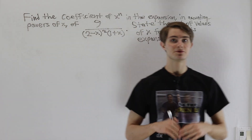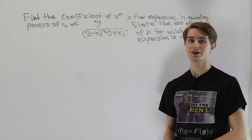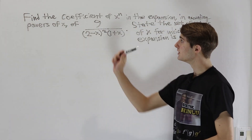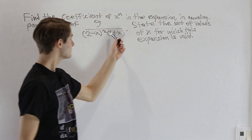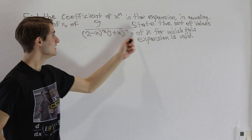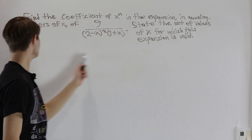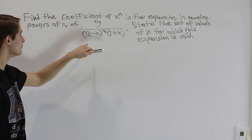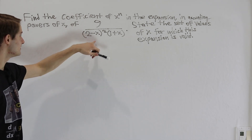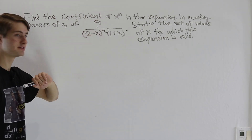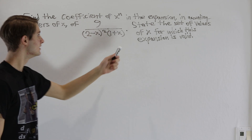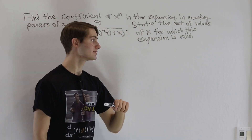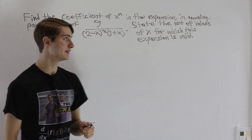We are going to do this problem from a University of Cambridge math examination. Find the coefficient of x to the n in the expansion in ascending powers of x of 9 over 2 minus x squared times 1 plus x, and state the set of values of x for which this expansion is valid.